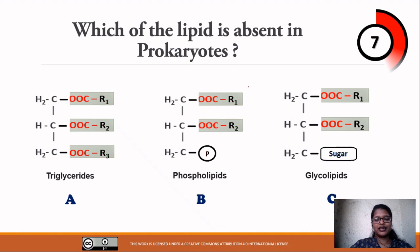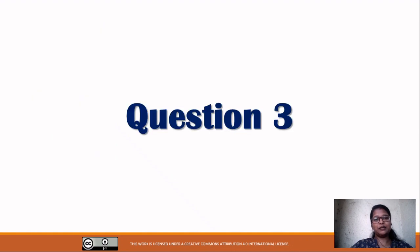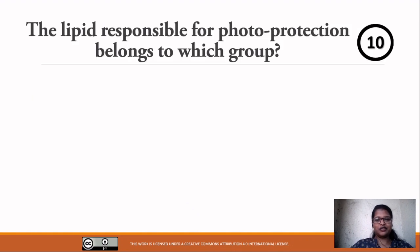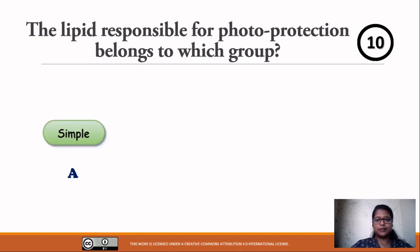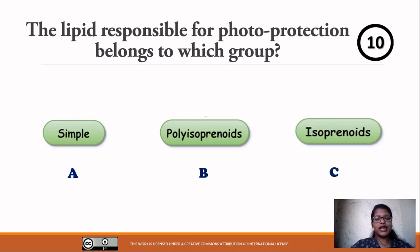Time is up. Question number three: The lipid responsible for photo protection belongs to which group? Your options — option A: simple, option B: polyisoprenoid, option C: isoprenoid. Your time starts now.